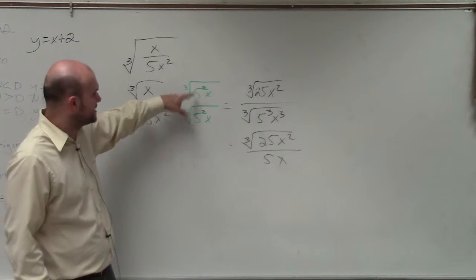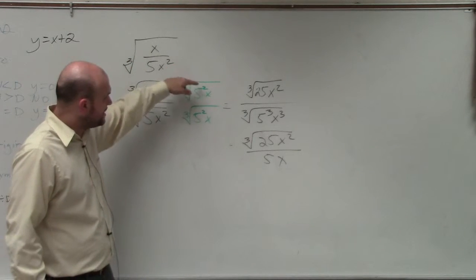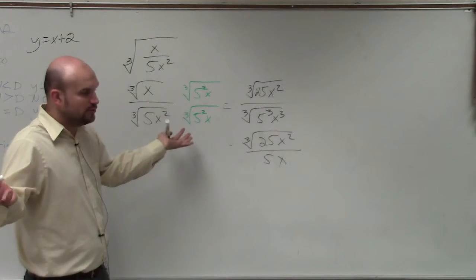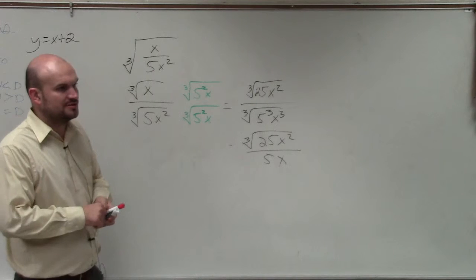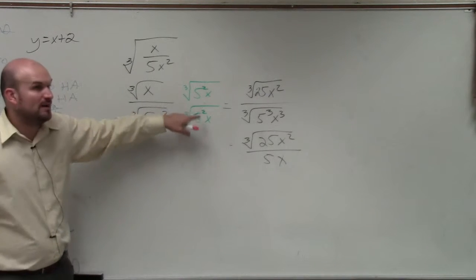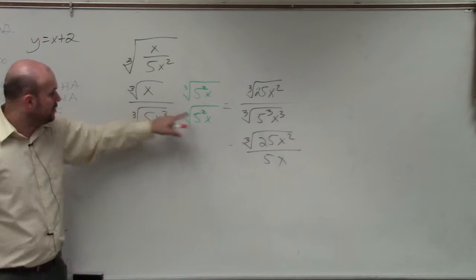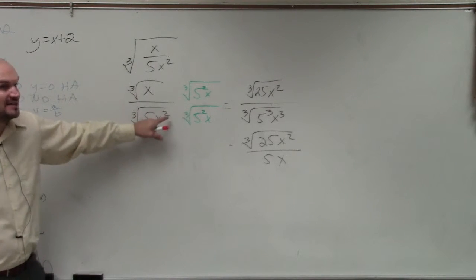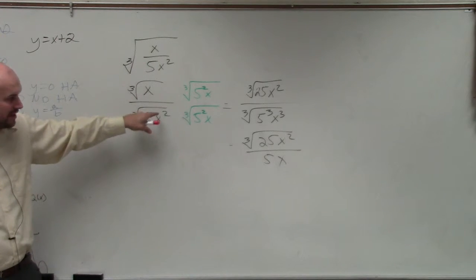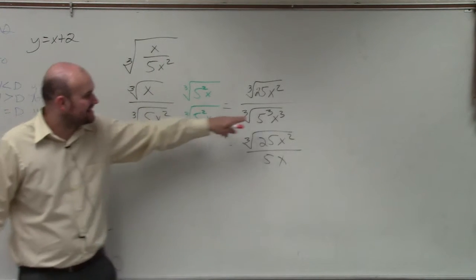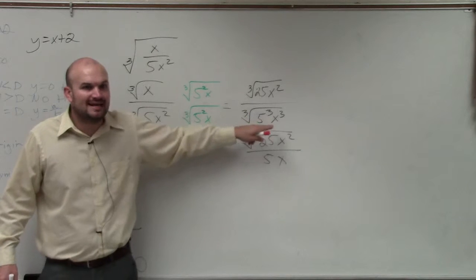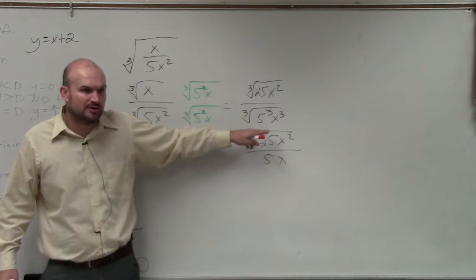As long as you multiply a fraction by the same number on the top and bottom, you're going to get equivalent fractions, so it doesn't matter what you multiply by. I chose to multiply by this rather than the cube root of 5x squared, because multiplying by this gives me a cubed radicand I can take the cube root of.